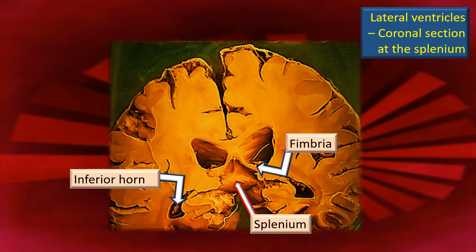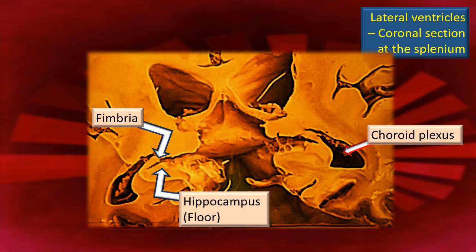Next, this is an important slide — a coronal section roughly a little behind the splenium of the corpus callosum. You can see the two fimbria from either side. The splenium is not sectioned, so the posterior end of the corpus callosum is visible. Inferolaterally, the triangular shape of the inferior horn is seen, with an upper wall or roof and a lower wall or floor. In the slightly enlarged view, you can see the choroid plexus hanging in the inferior horn, and also the hippocampus — reinforcing the point that the hippocampus is located in the floor of the inferior horn.